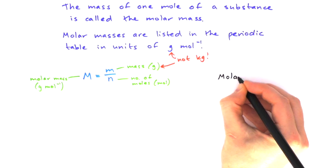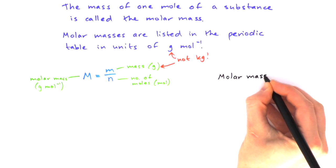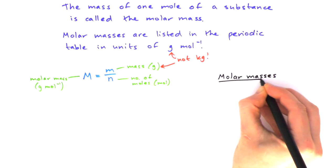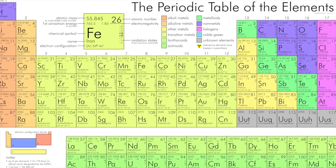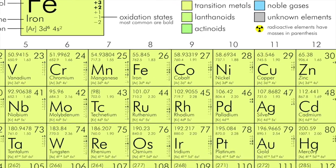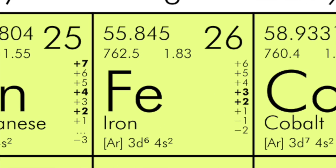Let's get some molar masses from the periodic table. Here's what the periodic table looks like. All these little numbers on the top tell you the molar mass of each element. They actually take into account that there are lots of different isotopes of each element. In naturally occurring iron, for example, the molar mass would be 55.8 grams per mole.